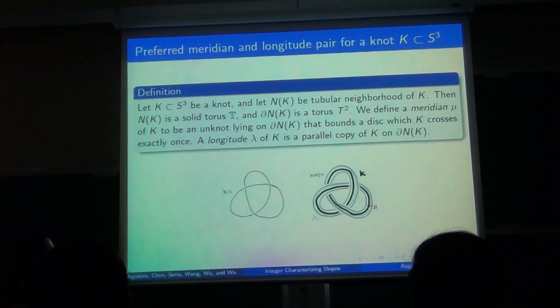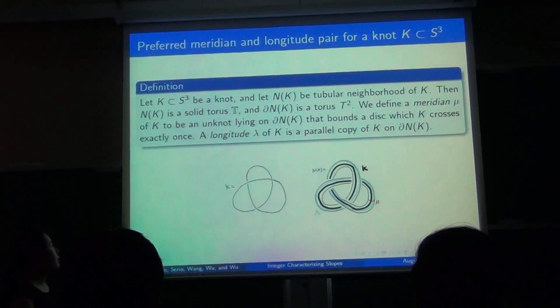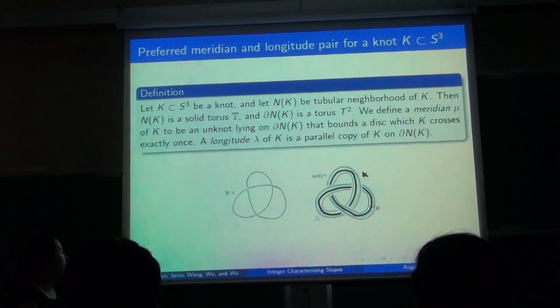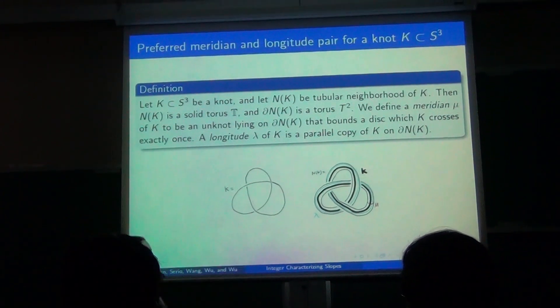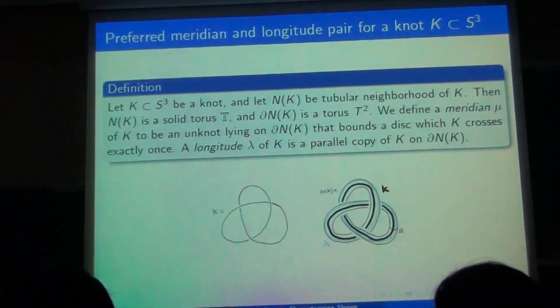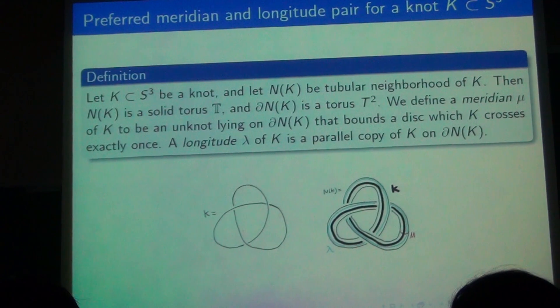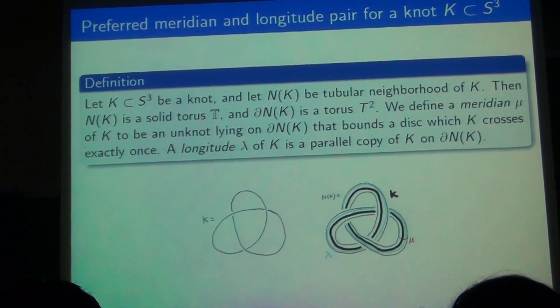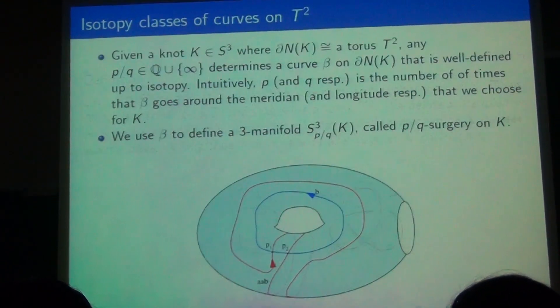And the boundary of that neighborhood is a torus. And we define the meridian μ of K to be an unknot just lying around on that boundary that K crosses exactly once. And the longitude is just a parallel copy of K lying on that boundary as well, as shown up here.